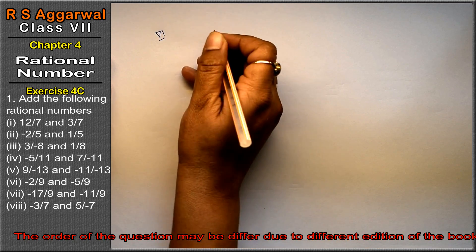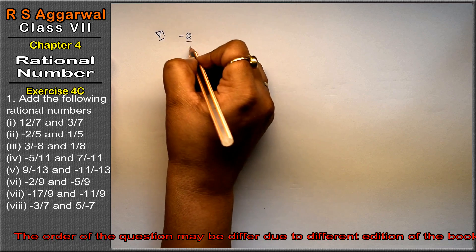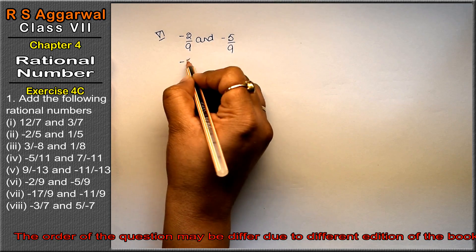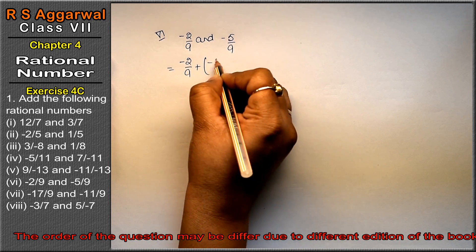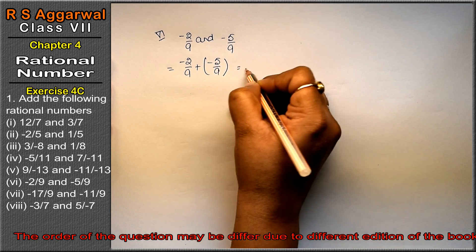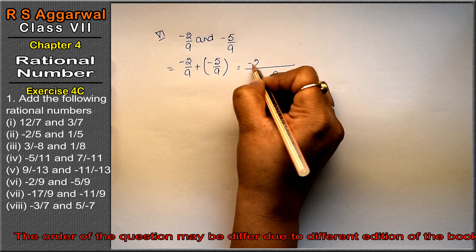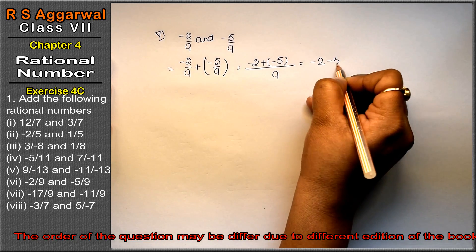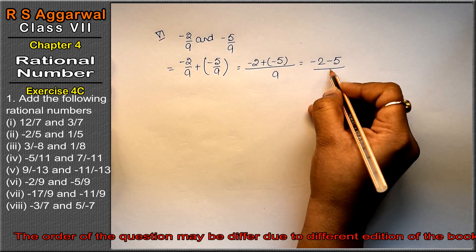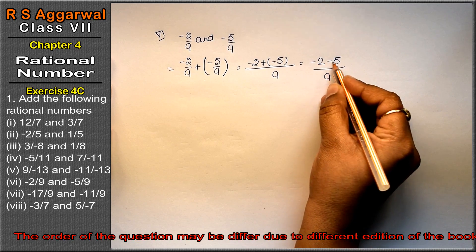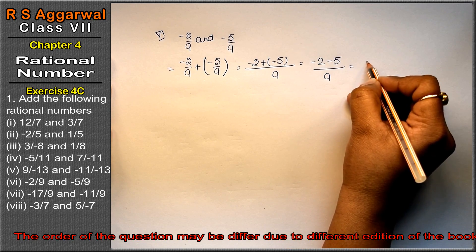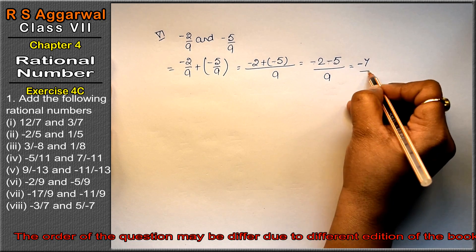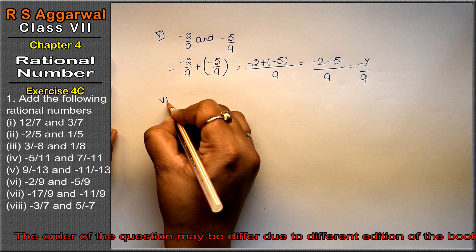6th part is minus 2 upon 9 and minus 5 upon 9. Adding: minus 2 upon 9 plus minus 5 upon 9. LCM is 9. Opening the sign: plus into minus is minus, giving minus 2 plus minus 5. Both signs are the same, so add them: 2 plus 5 = 7. Sign of both is minus, so minus 7 upon 9 is the answer.